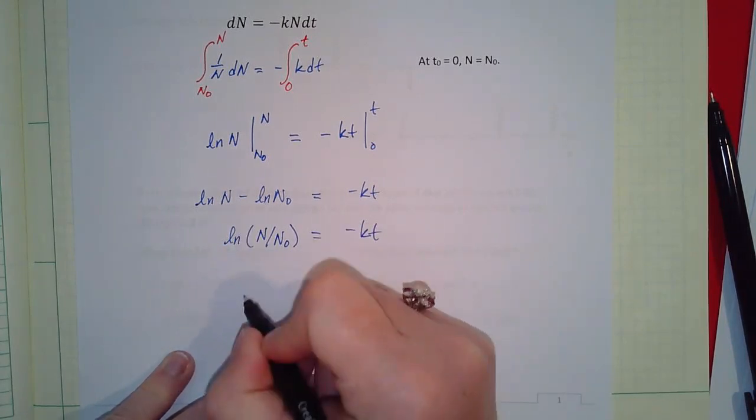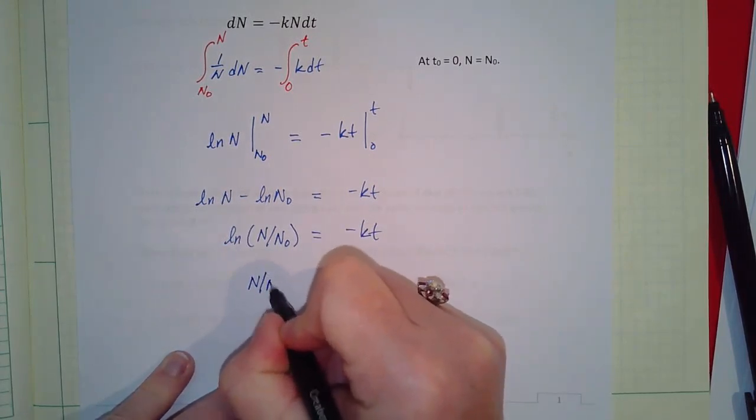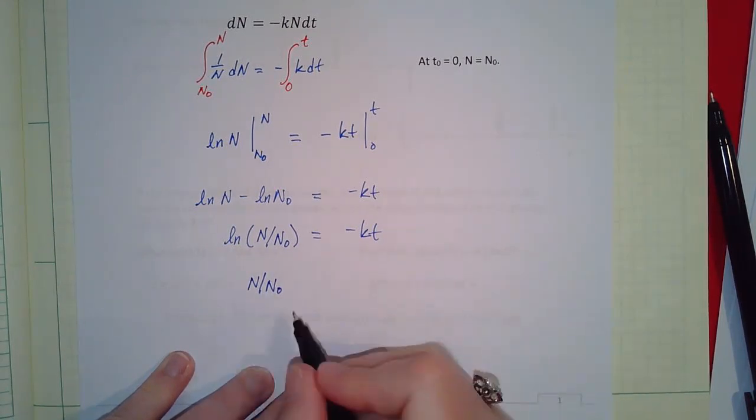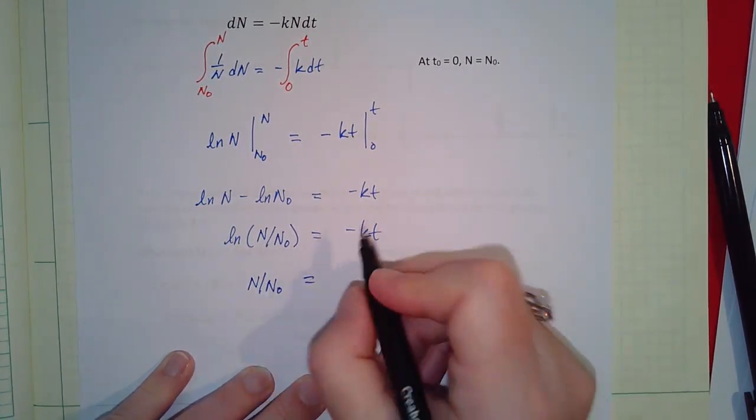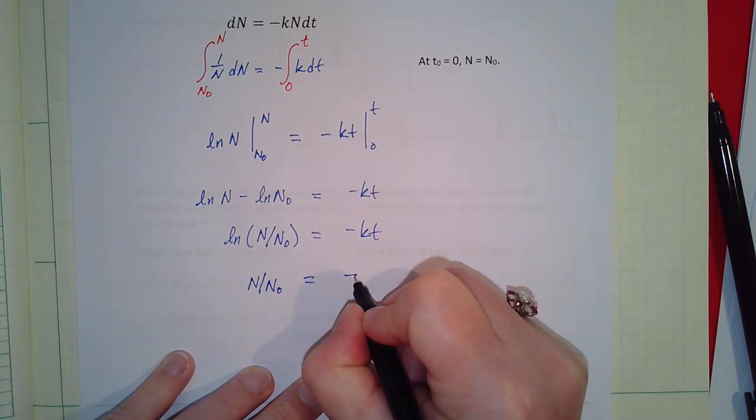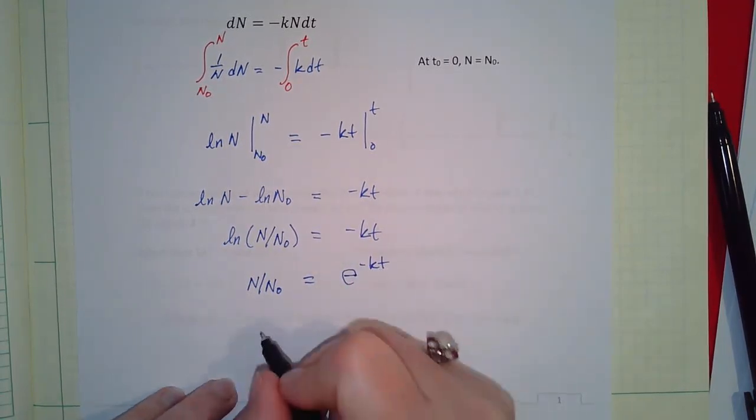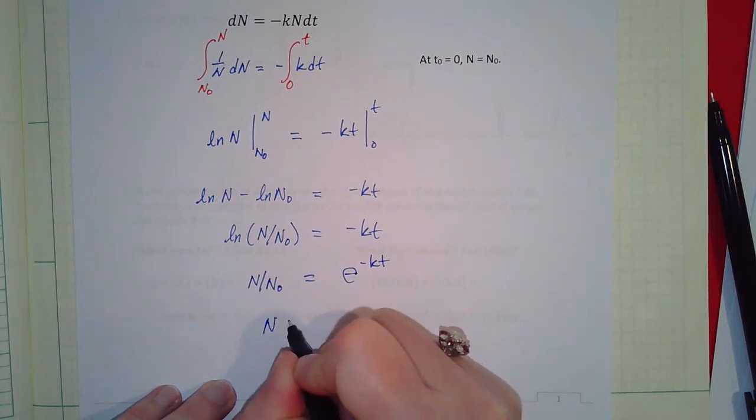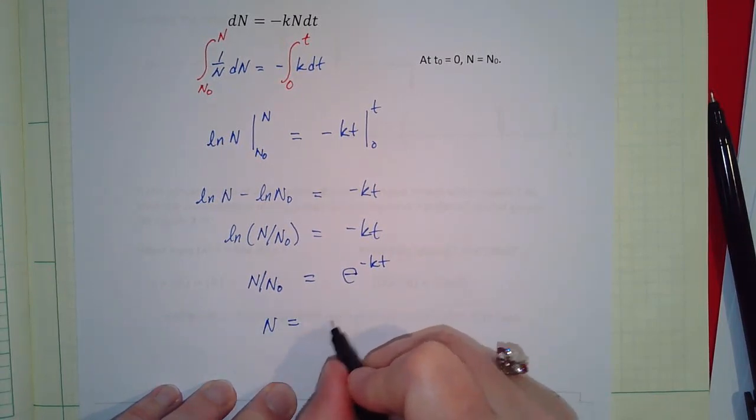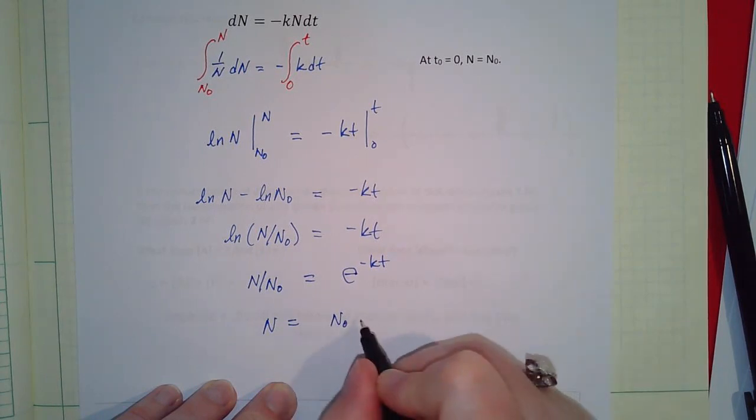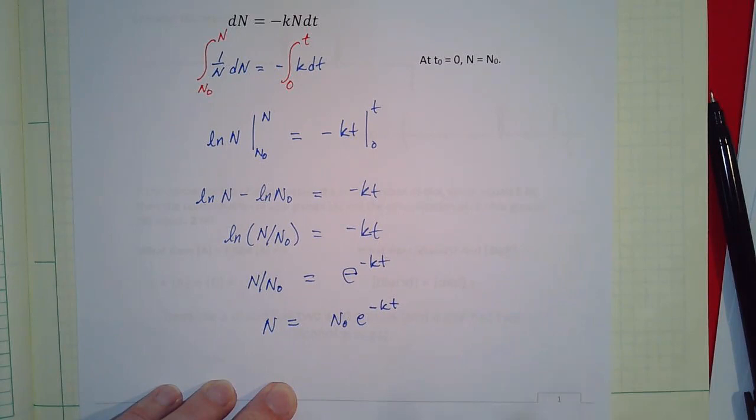So finally we get what we were after. Our number of atoms equals our initial number of atoms times e to the minus kt. And again this is showing us exponential decay.